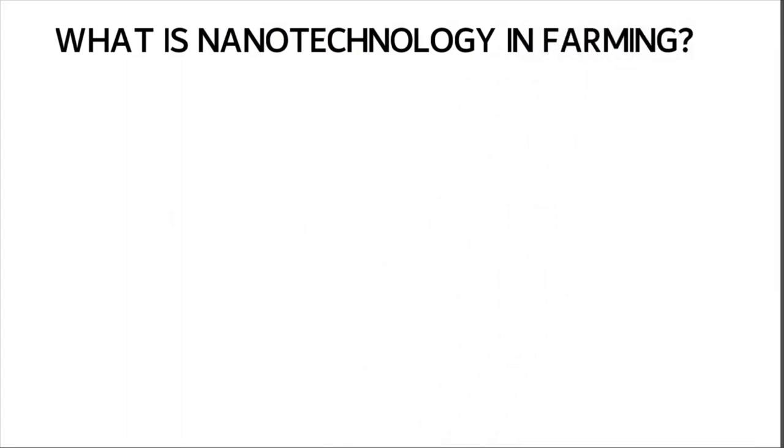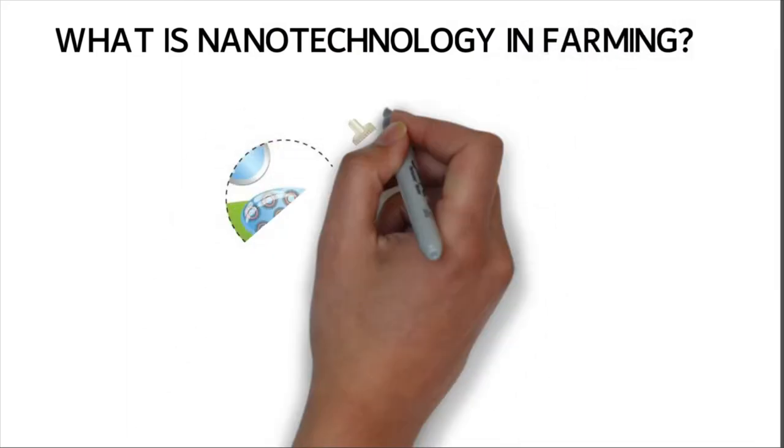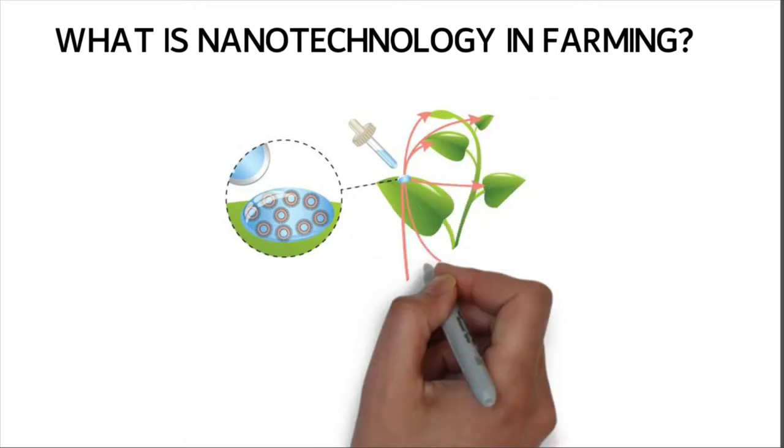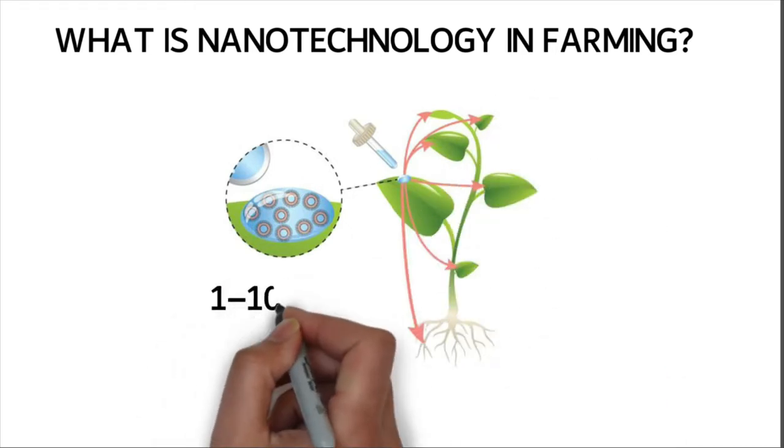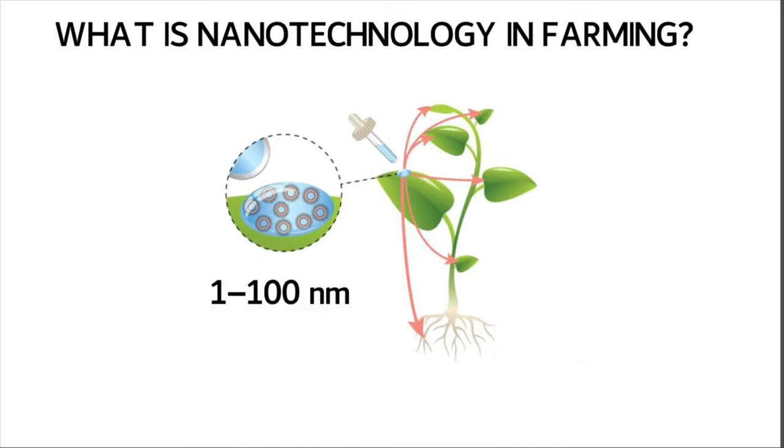What is nanotechnology in farming? In agriculture, nanotechnology can be defined as the manipulation of nanoparticles, which measure 1 to 100 nanometers, to increase agricultural production.